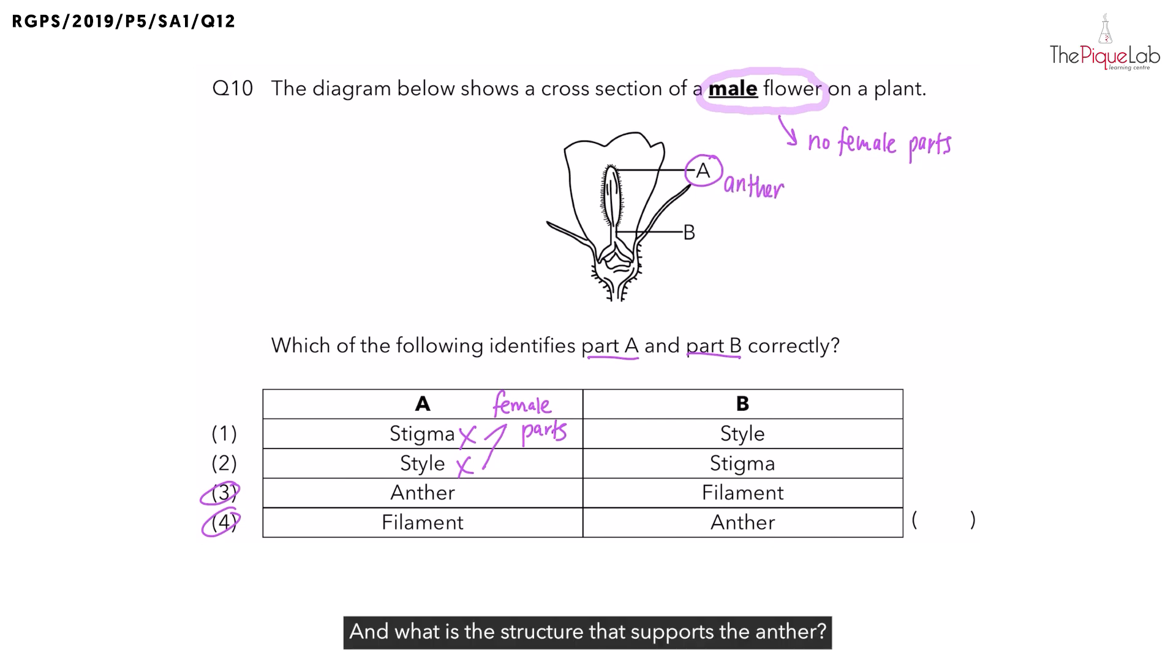And what is the structure that supports the anther? That structure is known as the filament, which is part B. So the correct answer would be option number 3. Part A being the anther and part B being the filament.